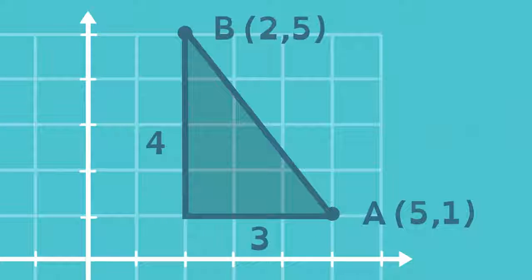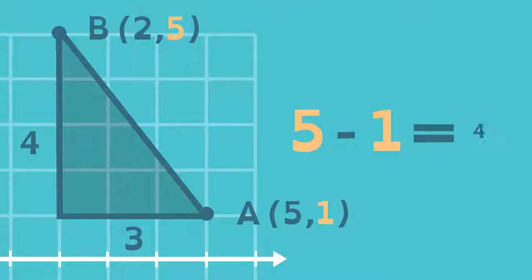For the vertical leg, take the y-distance of A and subtract the y-distance of B. This is equivalent to subtracting the y-coordinates of A and B.